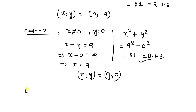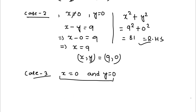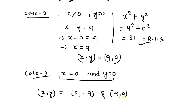In case 3, x equals 0 and y equals 0. This value satisfies neither equation 1 nor equation 2, so this case is discarded. The only valid solutions are (x, y) equals (0, minus 9) and (9, 0).